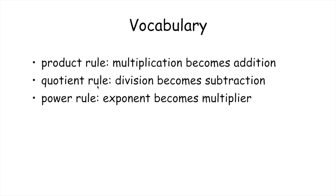The big thing with the product rule is that multiplication becomes addition. The quotient rule — that's like a division — division becomes subtraction. And then the third rule is the power rule, which means an exponent becomes a multiplier. If you want to have that down as your shorthand, just pause the video and write those down. Otherwise, we're going to go through each one individually.